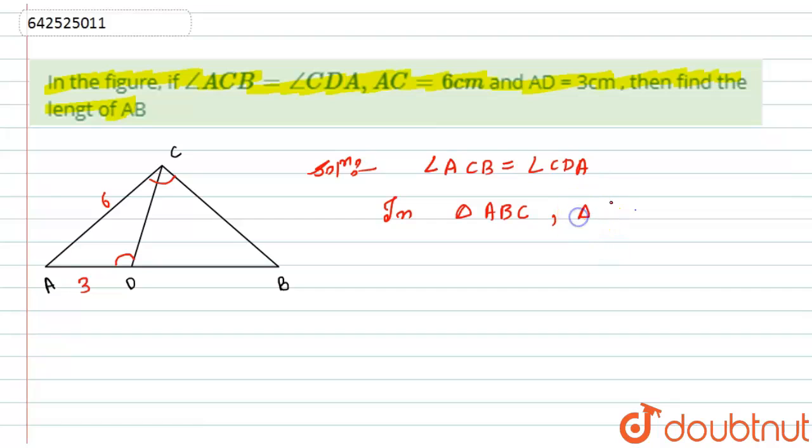So first I will write the given thing. What is given to us? The angle ACB is equals to angle CDA, from the given one.